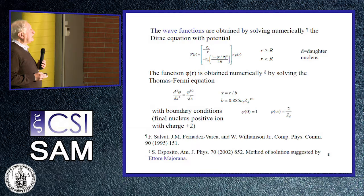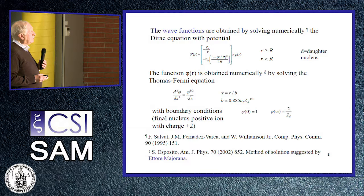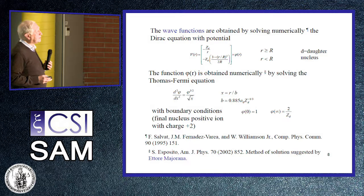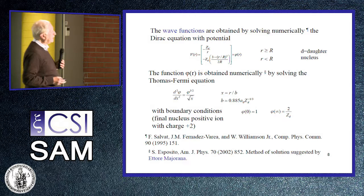The Thomas-Fermi equation is a second-order differential equation with phi to the three-halves power. The boundary conditions are such that the final nucleus is a positive ion with charge plus two. The Thomas-Fermi function at the origin is one, and at infinity is two divided by the charge of the daughter nucleus. The method of solution was suggested by Ettore Majorana in 1936, as referenced in the Esposito paper.